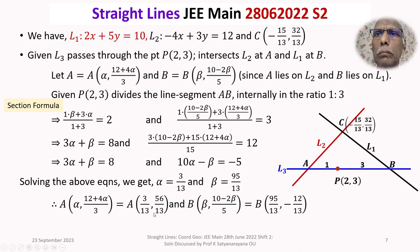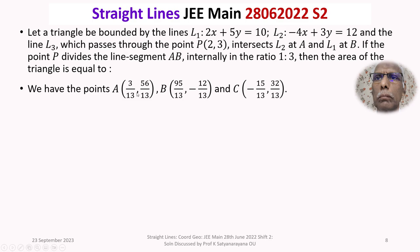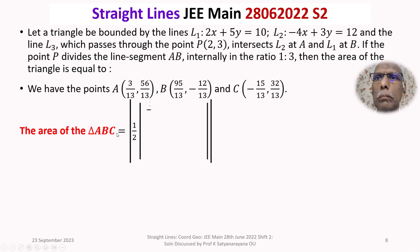We now have the coordinates of all three vertices of the triangle: A is (3/13, 56/13), B is (95/13, minus 12/13), and C is (minus 15/13, 32/13). With all vertices known, it is straightforward to find the area of triangle ABC.